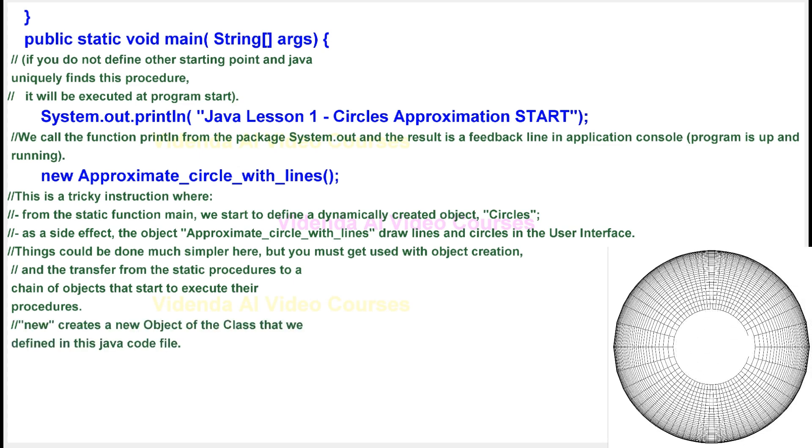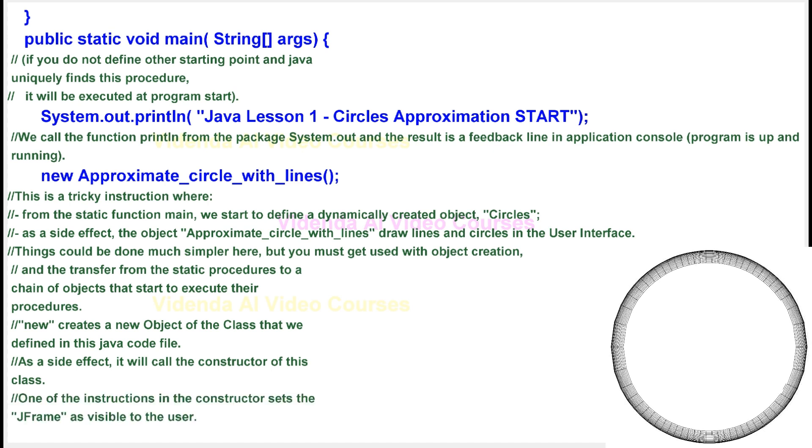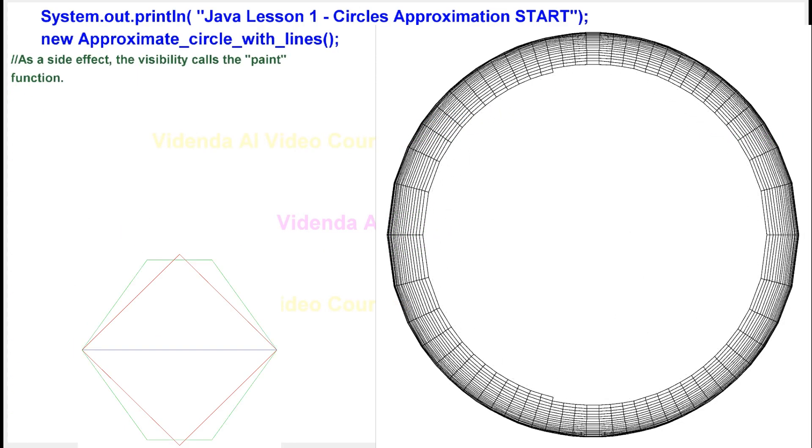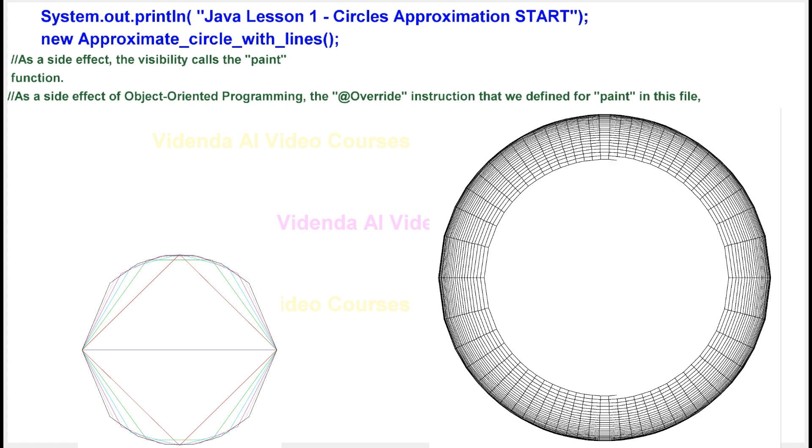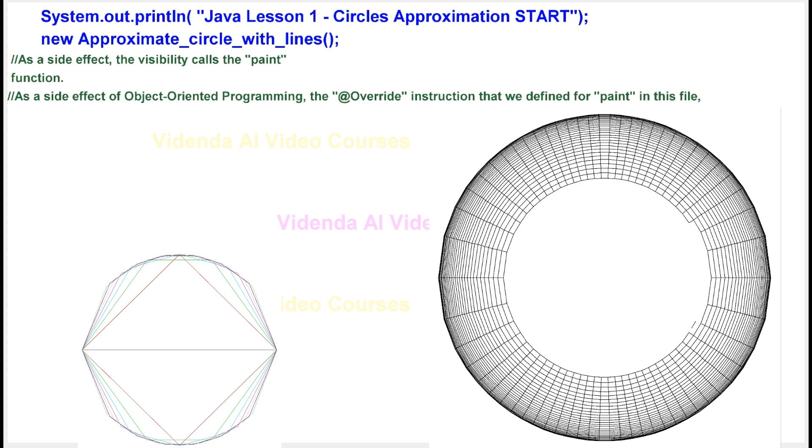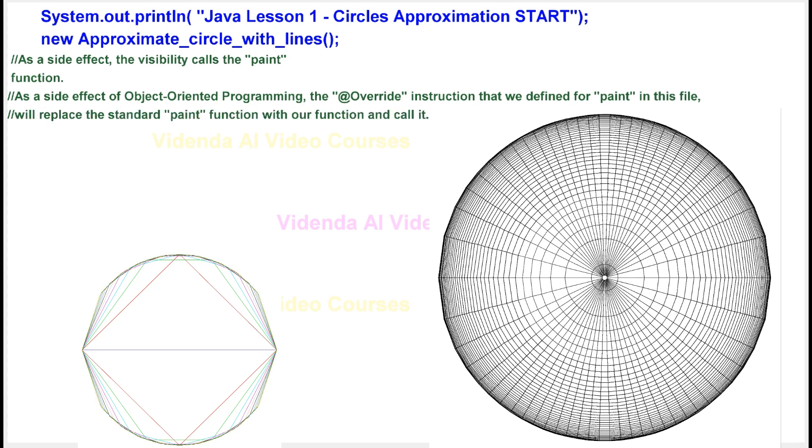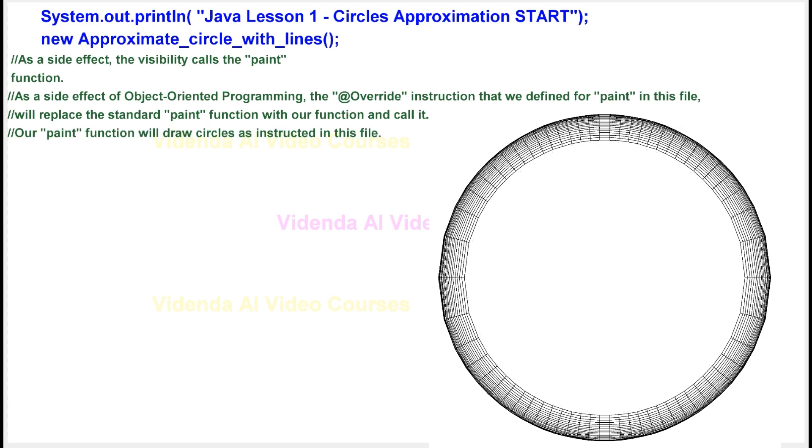New creates a new object of the class that we defined in this Java code file. As a side effect, it will call the constructor of this class. One of the instructions in the constructor sets the j-frame as visible to the user. As a side effect, the visibility calls the paint function. As a side effect of object-oriented programming, the @Override instruction that we defined for paint in this file will replace the standard paint function with our function and call it. Our paint function will draw circles as instructed in this file.